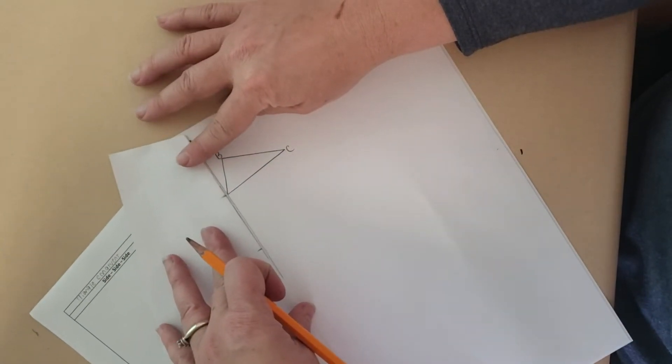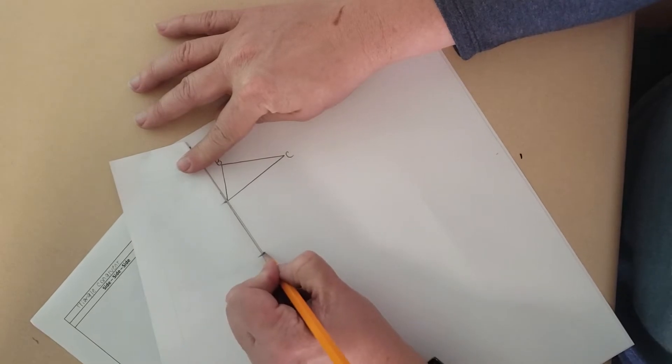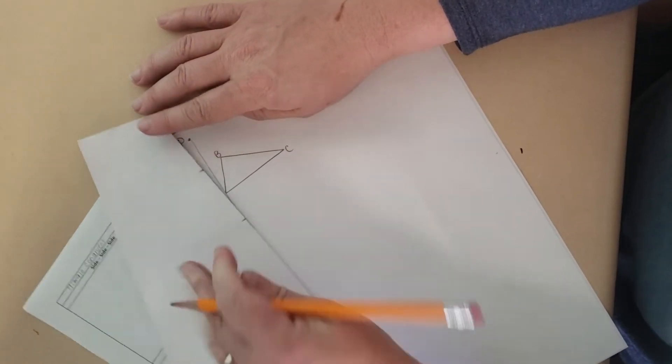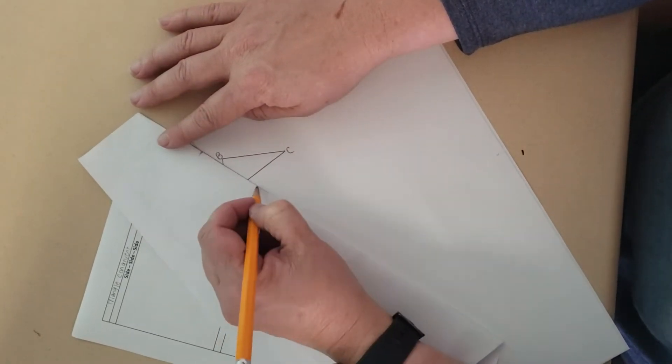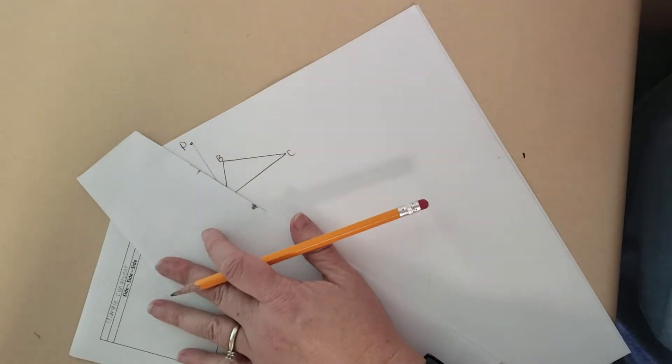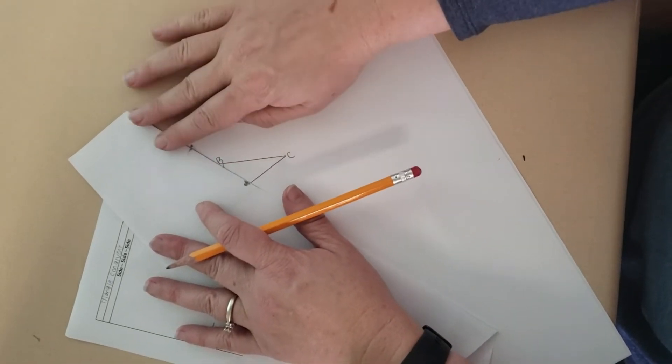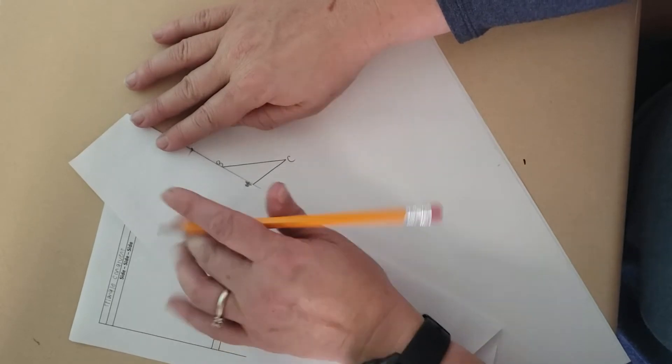I'm going to slide it down and there's my new point A prime. I'm going to do this again but I'm going to scratch this mark out because I'm not going to use that distance. I'm going to use the distance as said from P to B. So here's P. Here's B.